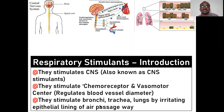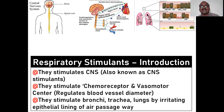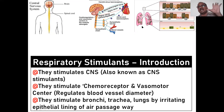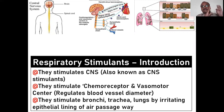They also stimulate the bronchi and trachea by irritating the epithelial lining. There are epithelial cells — some ciliated, some non-ciliated — all these types of cells are irritated by these agents, and that is why they stimulate the lungs for proper breathing. So not only do they stimulate the CNS, they also stimulate the chemoreceptors, vasomotor center, bronchi, and respiration.